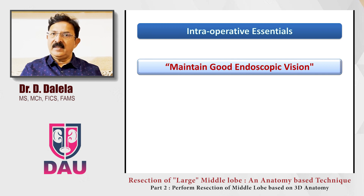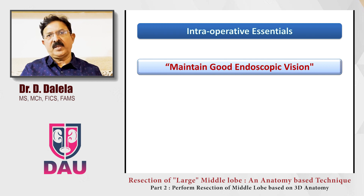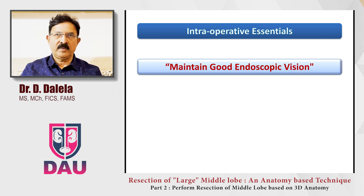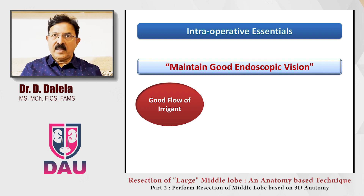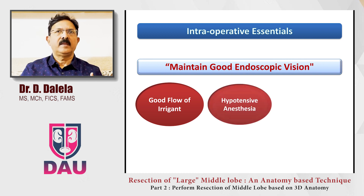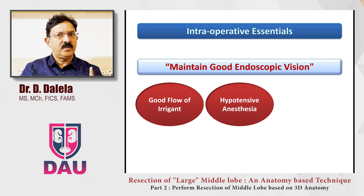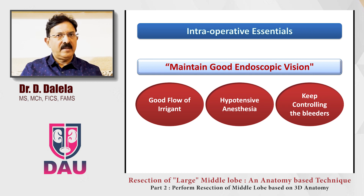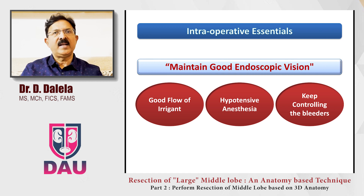As I said in my former video, during the entire process of resection of the middle lobe, you have to maintain very good endoscopic vision. For that: have a good flow of irrigant, always use a continuous flow sheath, you may ask your anesthetist to give the patient hypotensive anesthesia, and whenever you resect one or two chips on the middle lobe and notice a pumping bleeder, control it then and there. Follow these three principles.